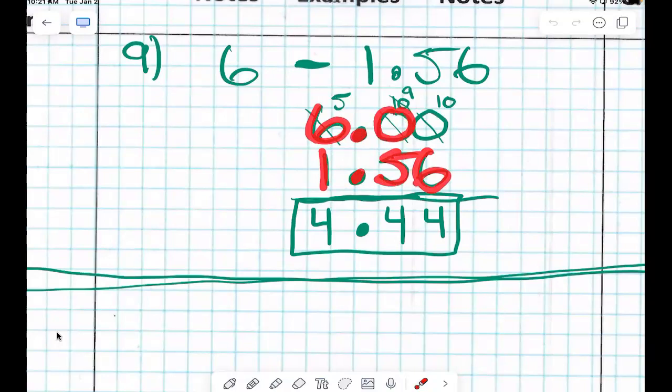And then I can just go ahead and add my zeros to even it out. Does that make sense? We cool?